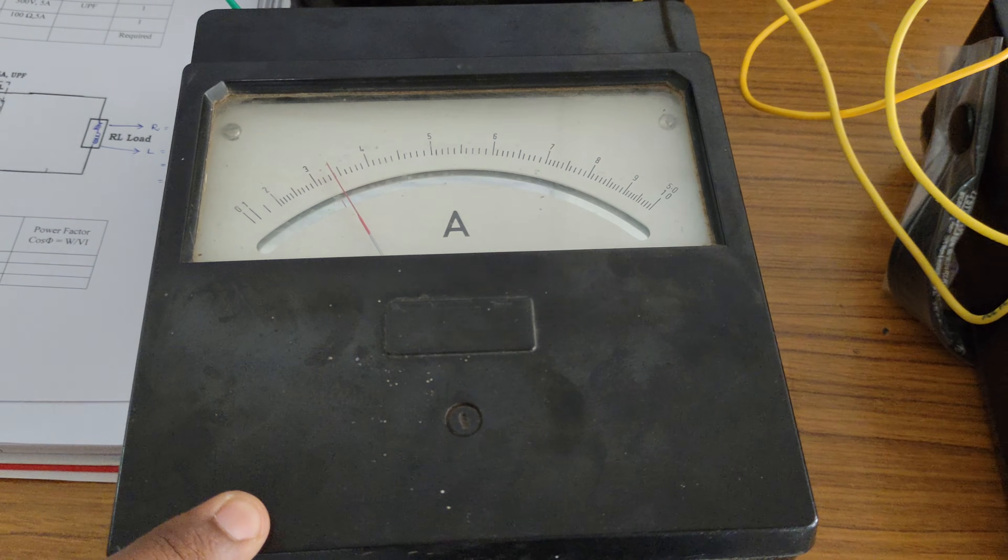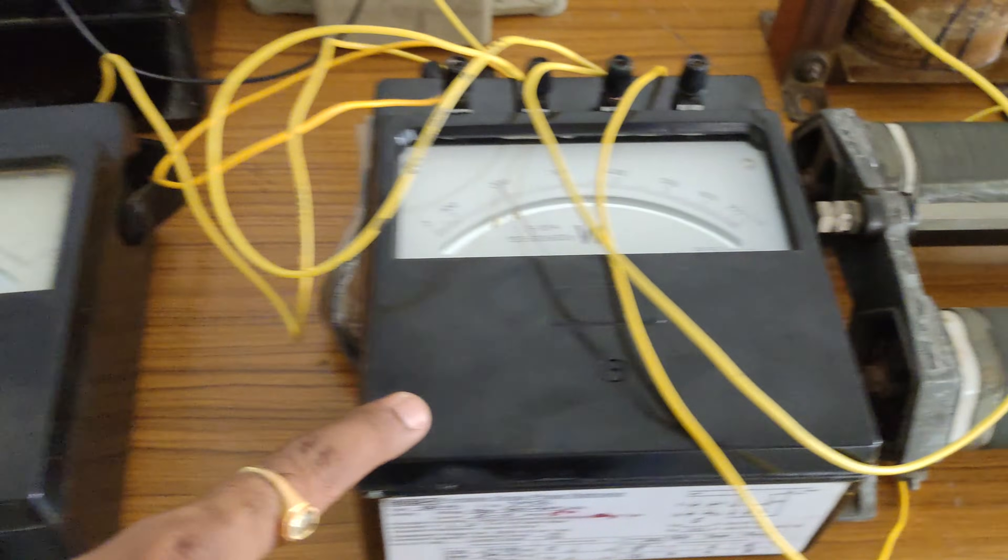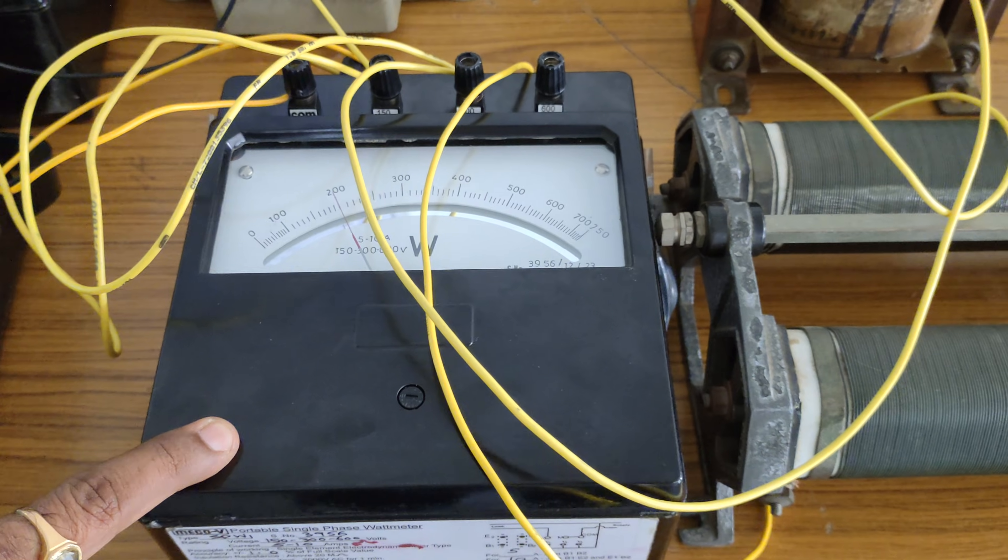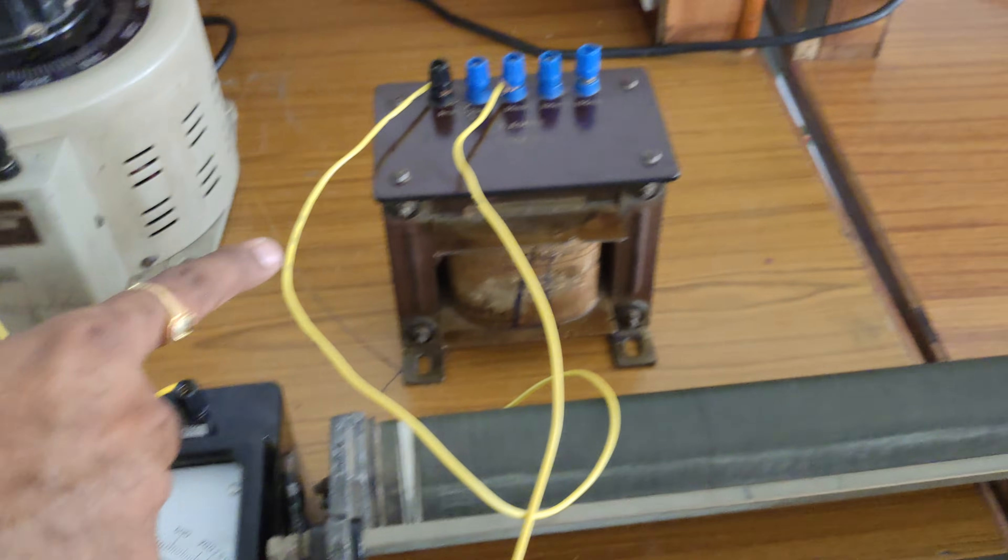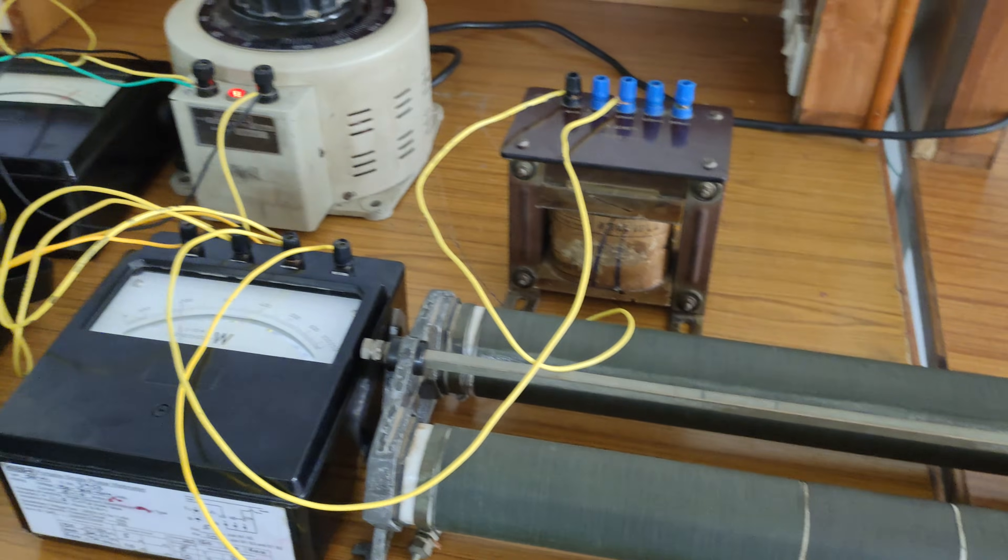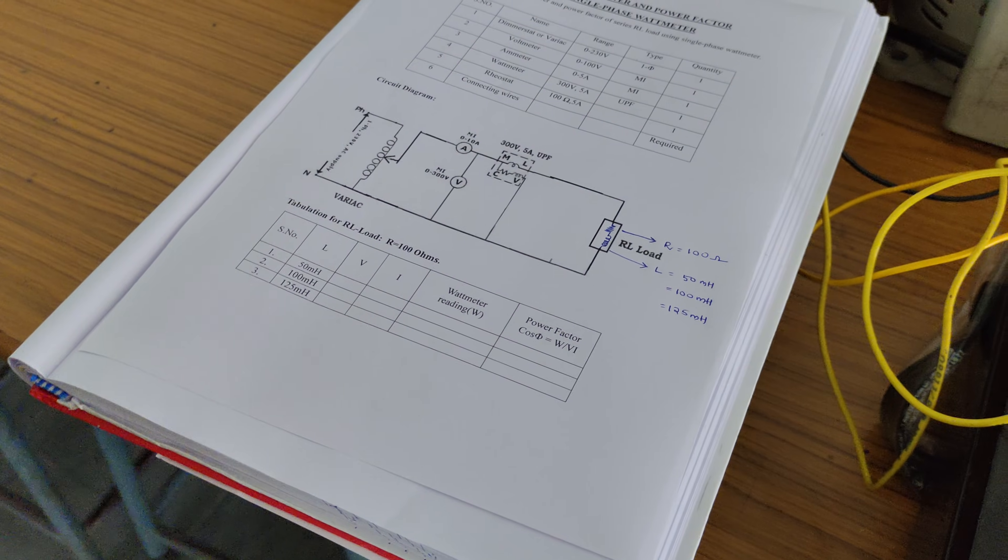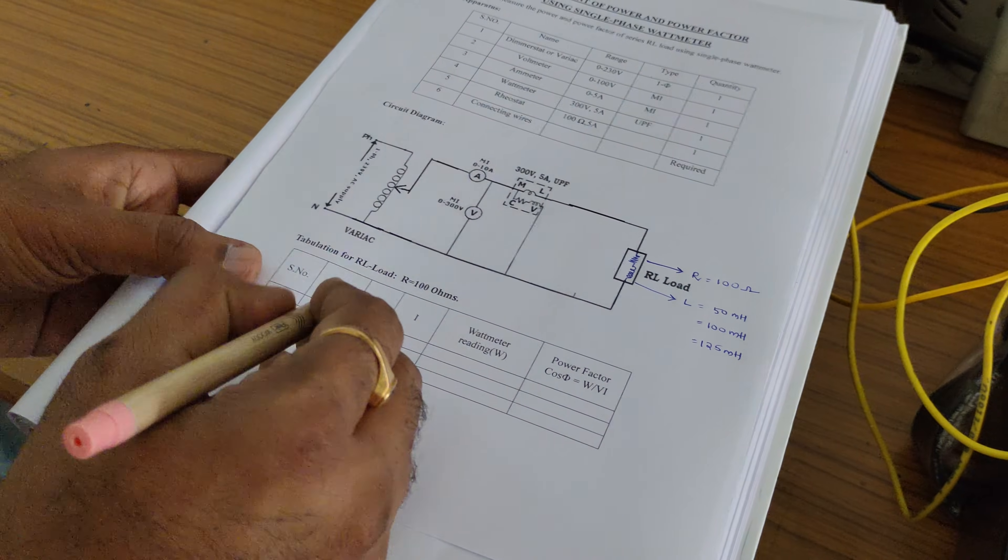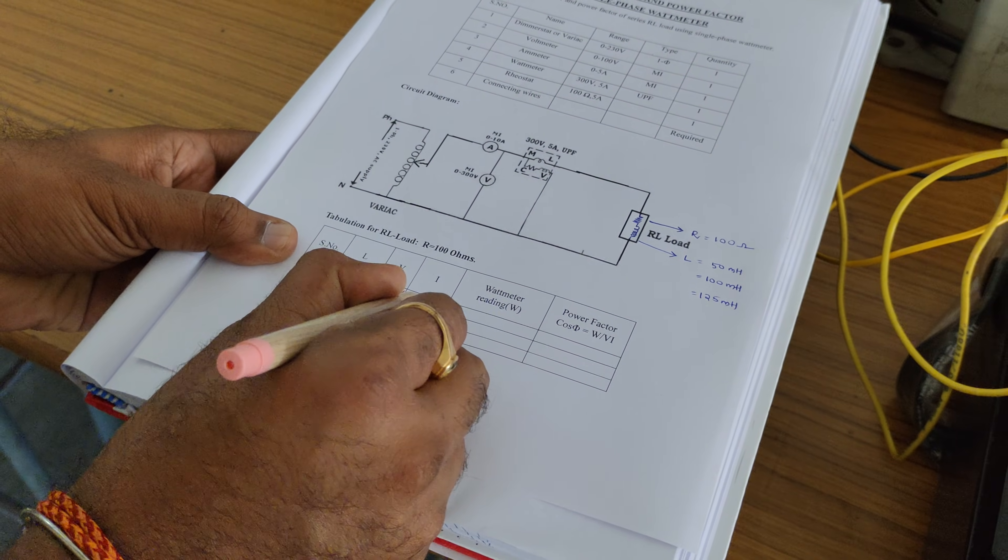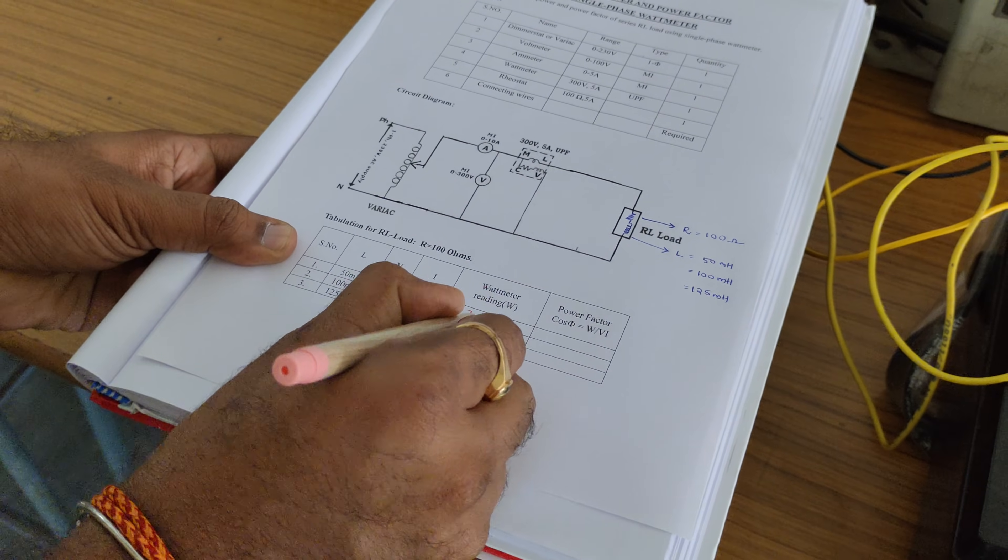Followed by observe the current reading. It is approximately 3.5 amperes. And the wattmeter reading here is 200 watts for the part of 50 millihenry followed by 100 ohms resistance load. We have to note down these readings here right now. Voltmeter reading here is 230 volts, current is 3.5 amperes, and the wattmeter reading here is 200 watts.